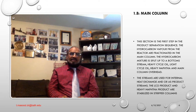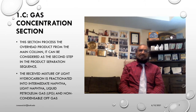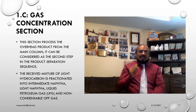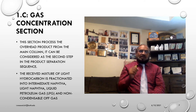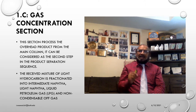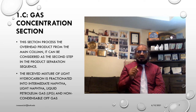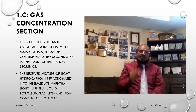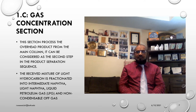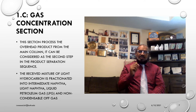The gas concentration section processes the overhead product from the main column. It can be considered as the second step in the product stream separation. The received mixture of light hydrocarbons is fractionated into intermediate naphtha, light naphtha, liquefied petroleum gases (LPG), and non-condensable off-gas. The obtained fractions are used for internal heat exchange and as product streams after adjustment of vapor pressure in several fractionation and stripper columns. Hydrogen sulfide H₂S is concentrated in the non-condensable off-gas and eliminated in an amine absorber column.